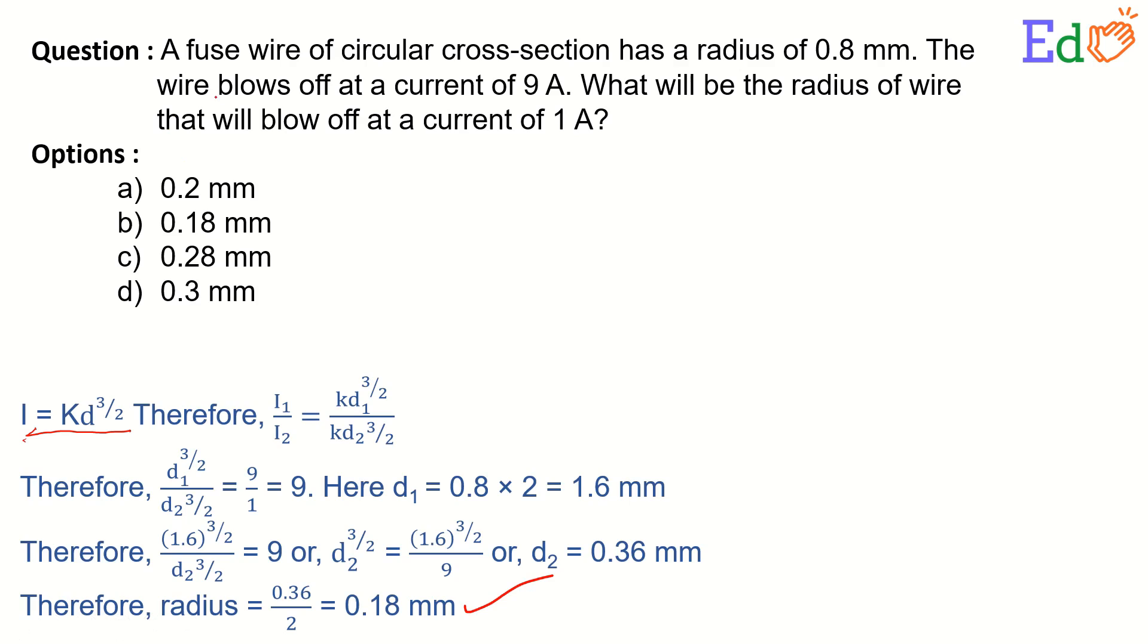Therefore, option B is the correct option, as far as the radius is concerned, corresponding to 1 Ampere of blowing out current. Thank you.